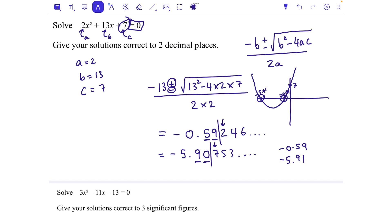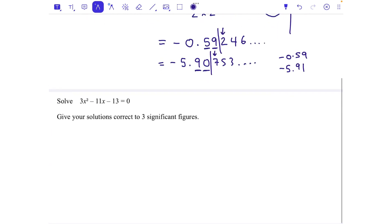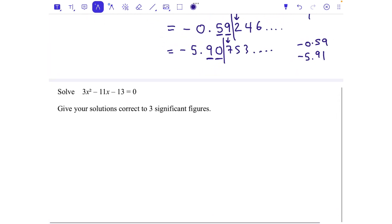So let's just try one more. Let's solve 3x squared minus 11x minus 13 equals 0, giving our solutions correct to three significant figures. So again we've got the formula minus b plus or minus the square root of b squared minus 4ac all over 2a. In this case a is 3 because it's the number in front of x squared, b is minus 11, and c is minus 13.